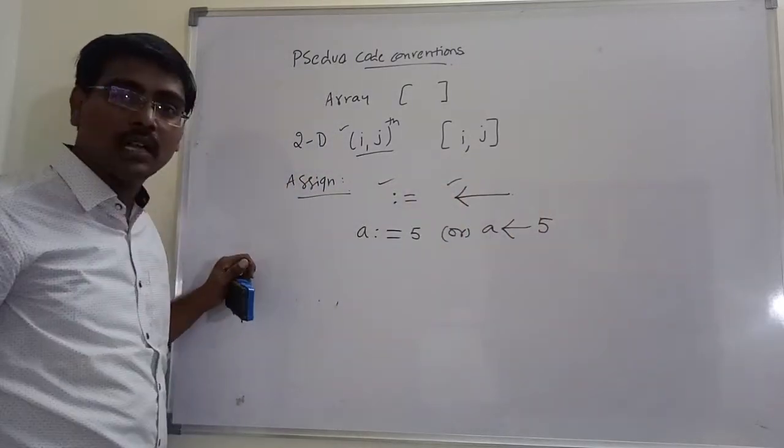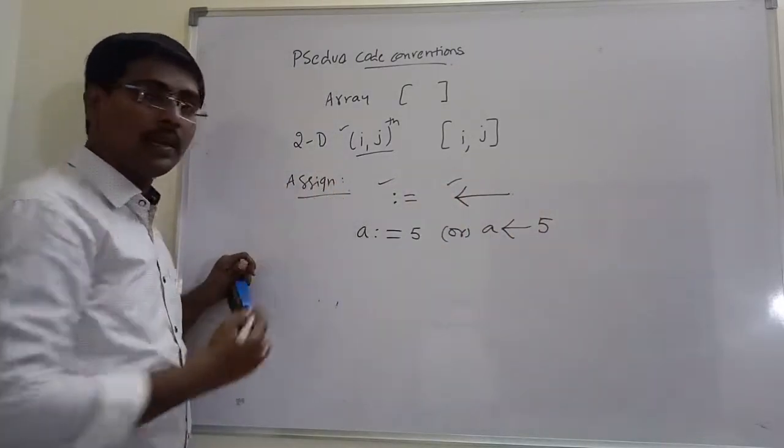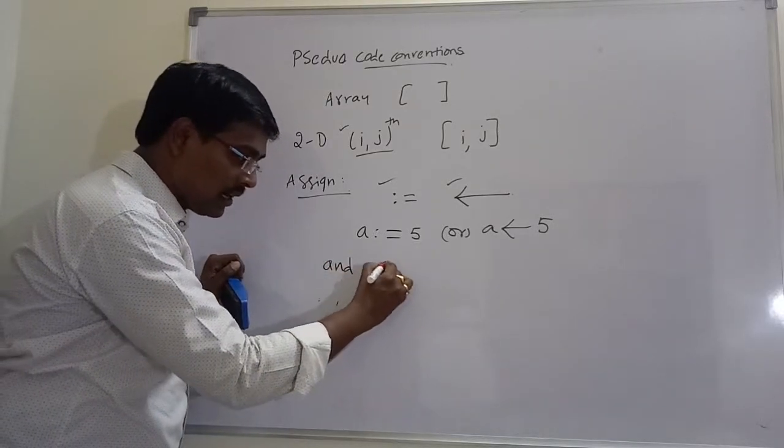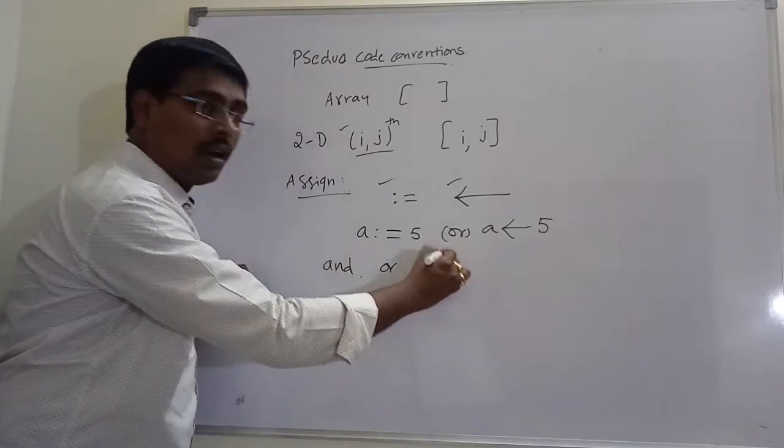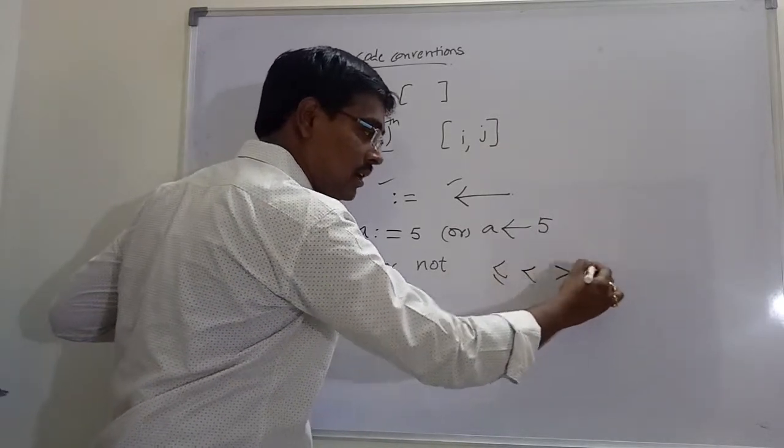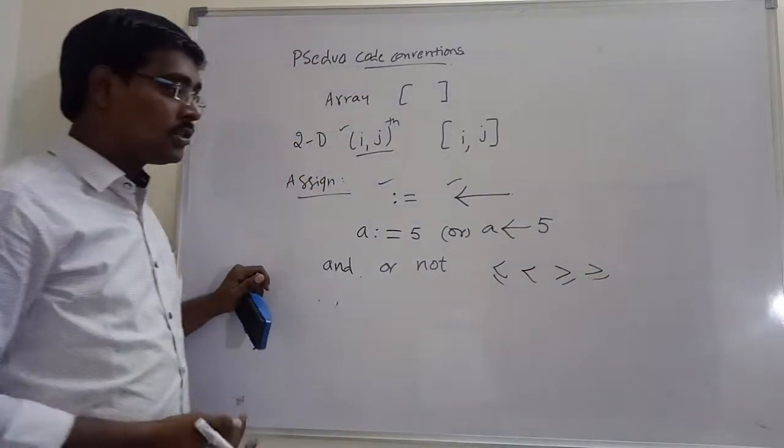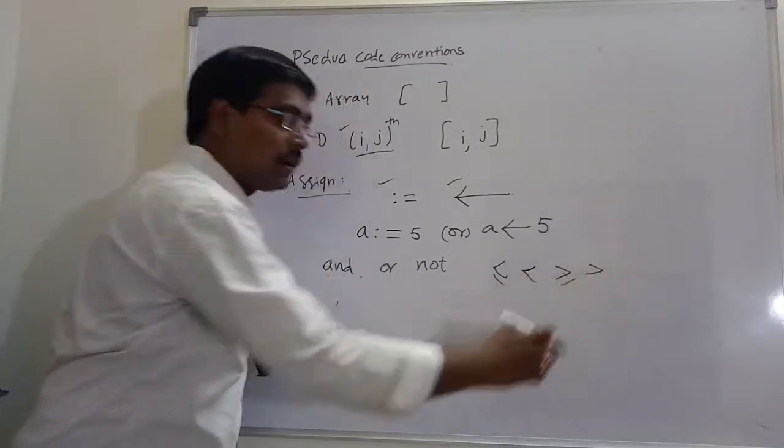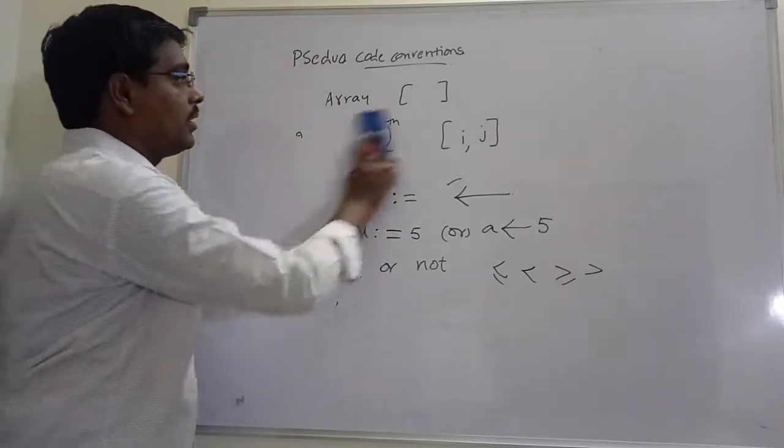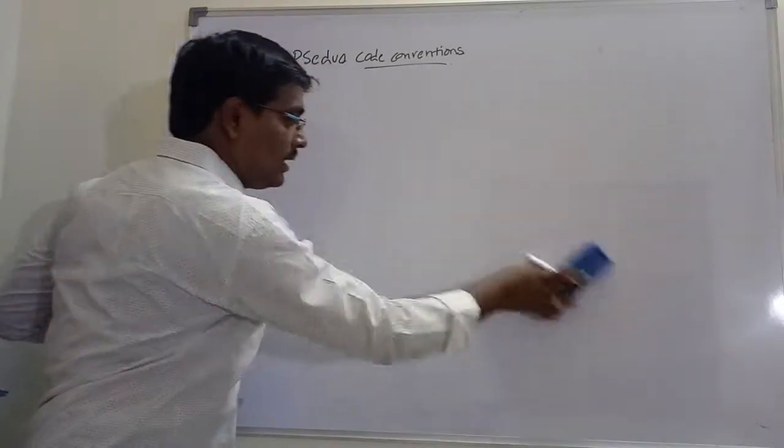assignment operators. Assignment operator is represented as colon equals or arrow mark. Either colon equals or some arrow mark. That means some example A := 5 or A ← 5. These two notations are acceptable. So assignment operators and logical operators are represented as directly AND, OR, NOT. Relational operators represented as less than or equal to, less than, greater than or equal to, greater than. So directly represents relational operator.